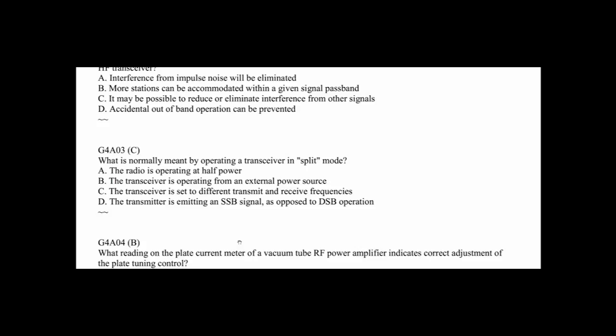G4A03: What is normally meant by operating a transceiver in split mode? The answer is C, the transceiver is set to different transmit and receive frequencies. The DX station might be on 14.195 listening 14.225, 30 kilohertz higher. So what you do is move your VFO to the frequency he's listening on. You leave your receiver on his transmit frequency and then you initiate the split, usually on the front of the transceiver, usually not a menu setting.